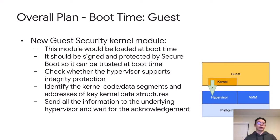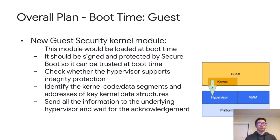So how does everything work end-to-end? We want to introduce a new guest security kernel module. This module should be loaded at boot time — ideally by the end of boot — so the kernel has already set up all the page tables, IDT, GDT, system call table, etc. It should be signed and protected by Secure Boot so it can be trusted at boot time. After it gets loaded, it will check whether the hypervisor supports special integrity protections. If it does, it will identify all the kernel code and data segments and the addresses of key data structures, then send a "please protect me" request to the hypervisor.